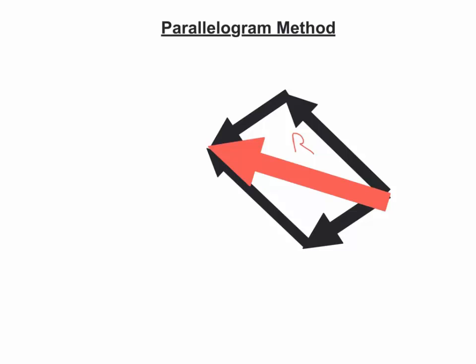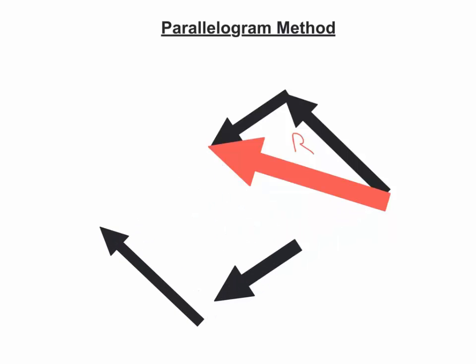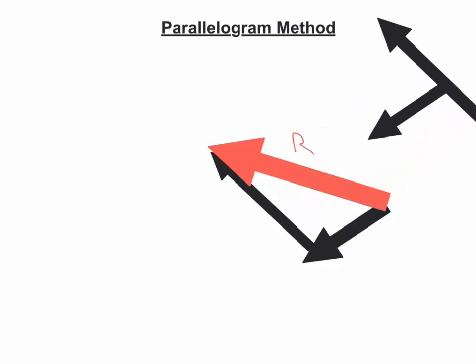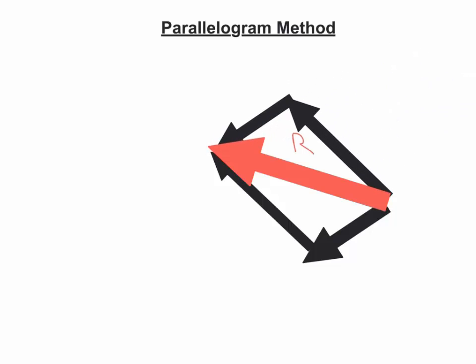But like I said before, remember this is really just tip to tail twice. So if you think about it, you could take away half of the parallelogram, and we've just added up two vectors as tip to tail and drawn the resultant, and you could do the exact same thing on the other side and take away the top two vectors, and you'd still have tip to tail on the bottom. But really, that's all the parallelogram is, is going and putting a bisecting line through tip to tail twice.